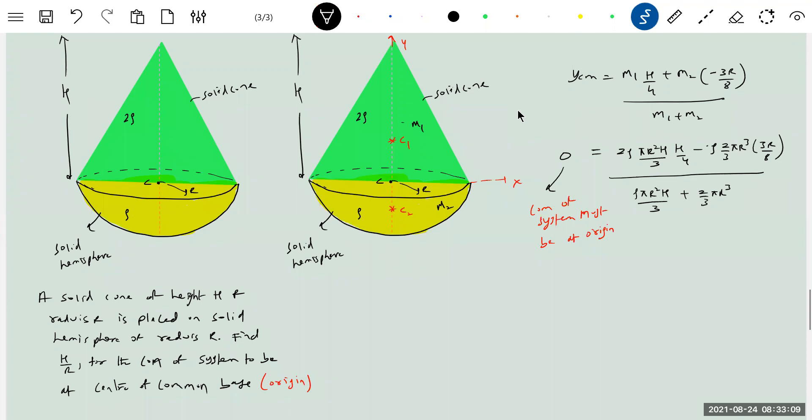Ok, now we have to solve for H and R. So I think we can take out ρ π R² by 3 common. 0 is equal to 2ρ π R² by 3, H² by 4, minus 3 R² by 8.